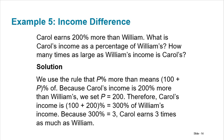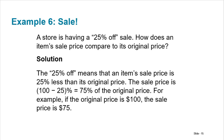For example, Carol earns 200% more than William. What is Carol's income as a percentage of William's? P percent more is 100 plus P, so 200% more means 100 plus 200, which is 300% of William's. Because 300% equals 3, Carol earns three times as much as William. Similarly, a 25% off sale means 100 minus 25 equals 75% is left, so the sale price is 75% of the original price — if it was $100, it's now $75.